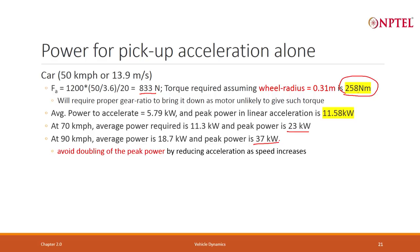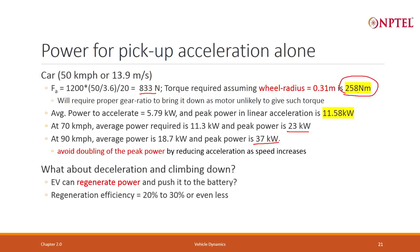So if you see, if I go to higher and higher speed and I still want to accelerate in 20 seconds, my power requirement will go higher and higher. Generally you do not go to this higher peak power because you accelerate faster in the beginning and then slower, and that can probably bring it down to 18.7 kW.